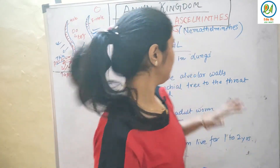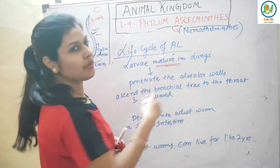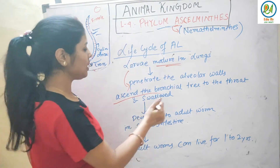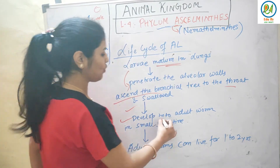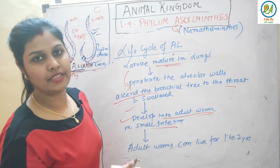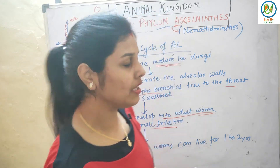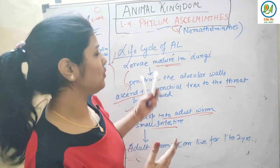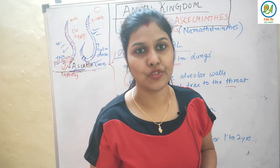Continuing the life cycle: the larvae mature in the lungs, then penetrate the alveolar walls and ascend the bronchial tree to the throat, are swallowed, and travel to the small intestine where they grow into adult worms. The adult worm can live in the body for one to two years.